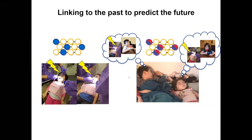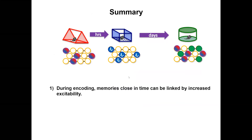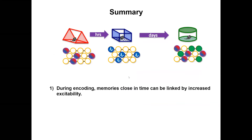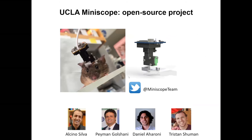In summary: the first set of studies showed that during encoding, memories close in time can be linked by increased excitability. The second, unpublished set suggests that after encoding, memories are still dynamic and can be updated and linked to past experience through ensemble reactivation. Now I want to spend the last few minutes on this exciting project I started as a postdoc that our lab continues to develop: open source neuroscience tools.